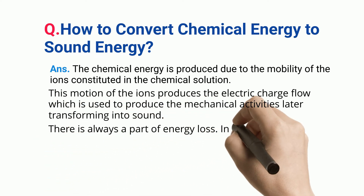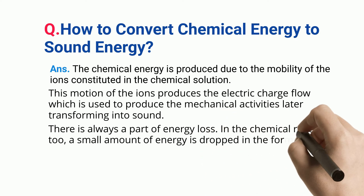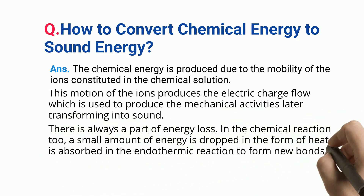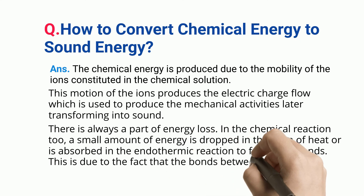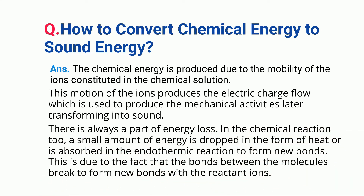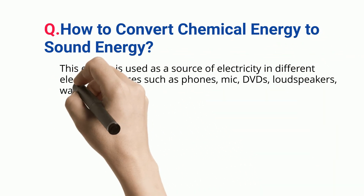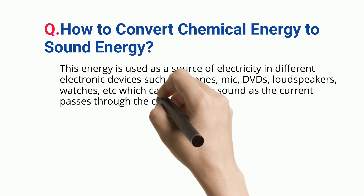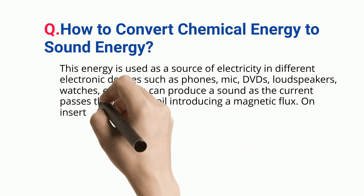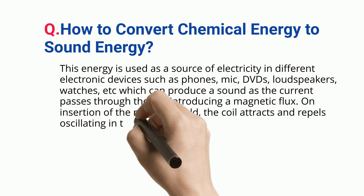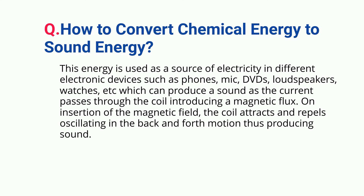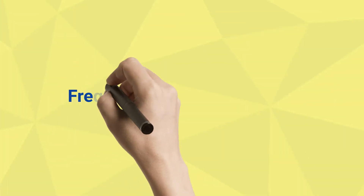There is always a part of energy loss in a chemical reaction. A small amount of energy is lost as heat or absorbed in endothermic reactions to form new bonds. This energy is used as a source of electricity in electronic devices such as phones, microphones, DVDs, loudspeakers, and watches, which produce sound as current passes through the coil, introducing a magnetic flux. The insertion of the magnetic field causes the coil to attract and repel, oscillating in a back-and-forth motion, thus producing sound.